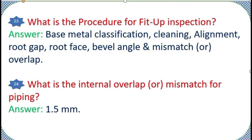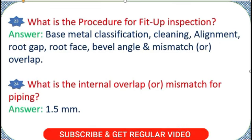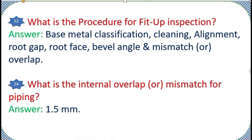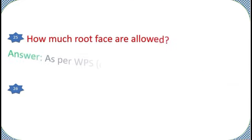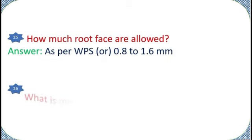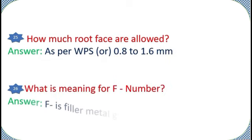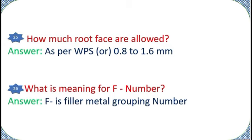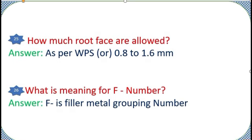What is the internal overlap or mismatch for piping? Answer: 1.5 millimeters. How much root face are allowed? Answer: As per WPS, or 0.8 to 1.6 millimeters.